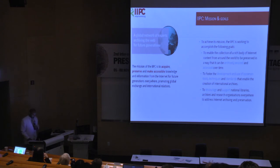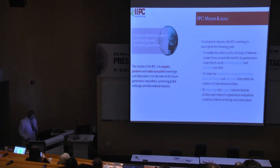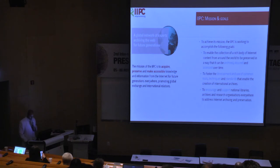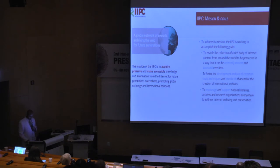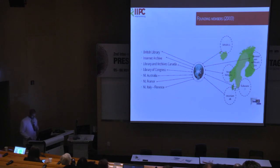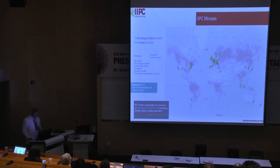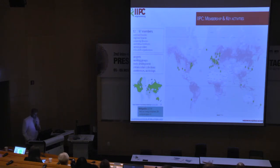The IIPC's mission is to acquire, preserve, and make accessible content from the World Wide Web. For that, we have set three primary goals: to harvest content from the Web, to foster development of tools, and to enable and encourage institutions around the world to promote web archiving as an important mission for digital preservation. The consortium was formed in 2003 with 12 founding members who met at the National Library in France. It has been growing, and today in 2019 it's made up of 57 members involved with different activities, projects, tools development, collaborative collections, and conferences.